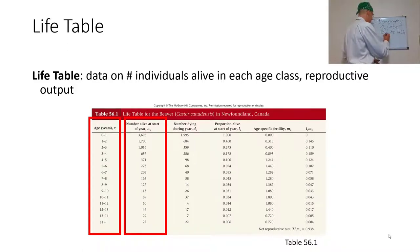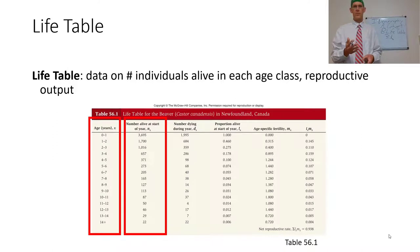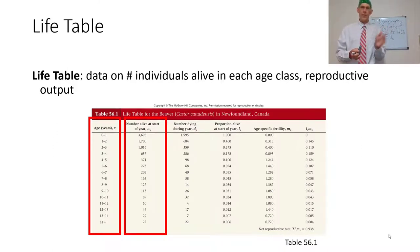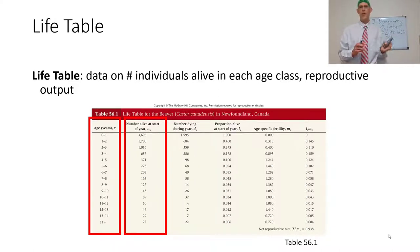We take this death statistic and use it to calculate L sub x — the proportion alive at the start of the year. L sub 1 is always going to be 1. L sub 2 will tell you what proportion actually makes it through their first year and starts year 2. L sub x can never go up, it only goes down. When L sub x is 0, you should have stopped measuring a year ago.